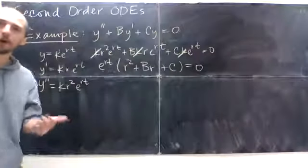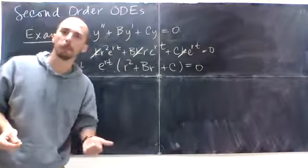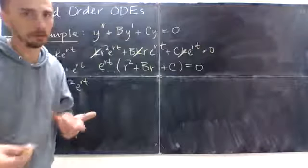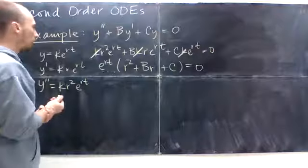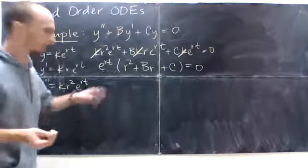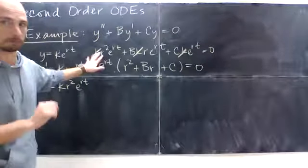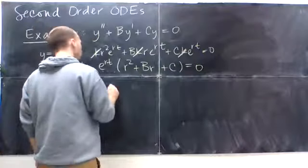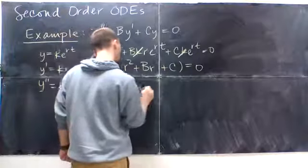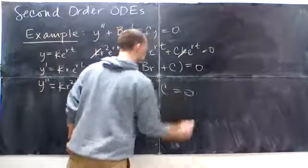And I'll be left with an r squared plus b r plus c equal to 0. But I know that e to the rt is a positive number, for any real value of t. That's going to be a positive number. And it's never going to be 0. No matter what t is, in any world, that's not going to be 0. So I can divide both sides by e to the rt. And so that gives me r squared plus b r plus c equaling 0.